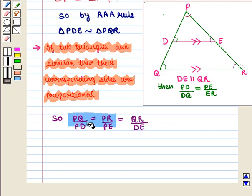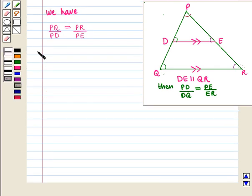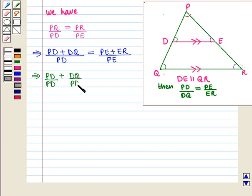Now, taking these first two ratios, we have PQ can be written as PD plus DQ whole upon PD, and this is equal to PE plus ER upon PE. This further implies that PD upon PD plus DQ upon PD is equal to PE upon PE plus ER upon PE. That implies that 1 plus DQ upon PD will be equal to 1 plus ER upon PE.